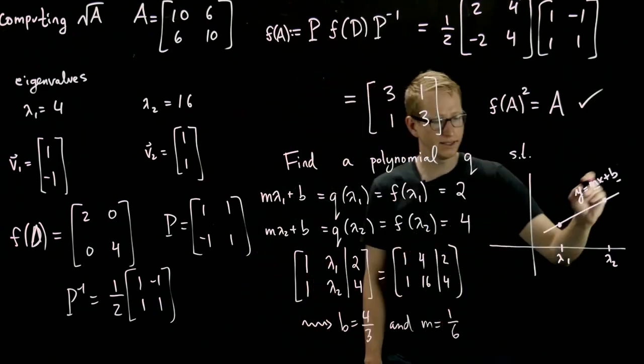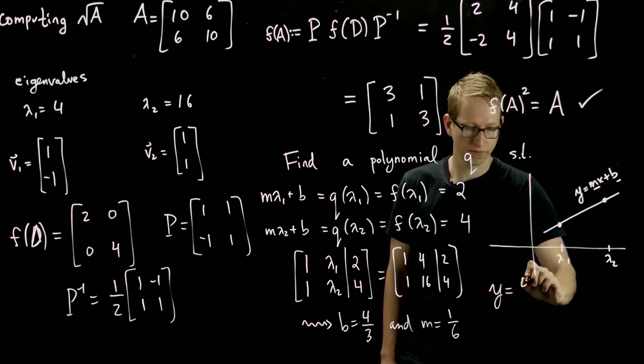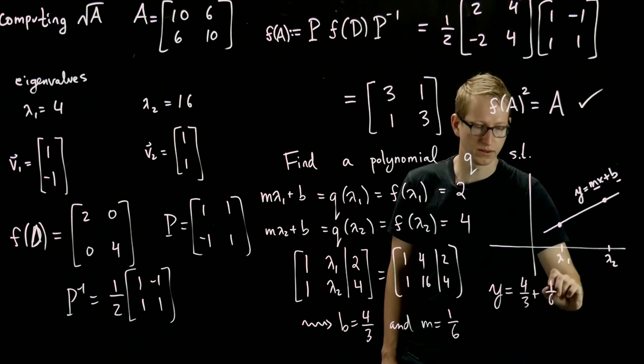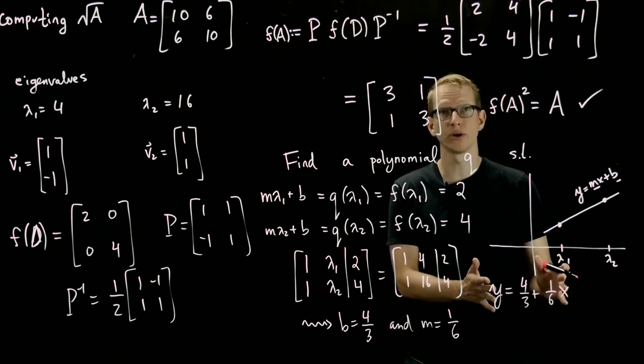So this line is of the form y equals 4 thirds plus 1 sixth x. And that's our polynomial. This is our q of x.